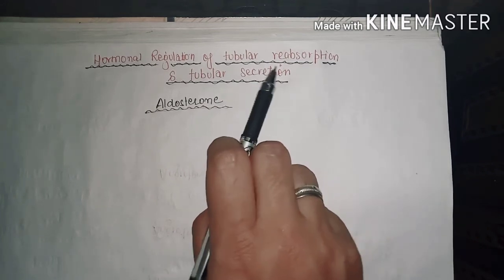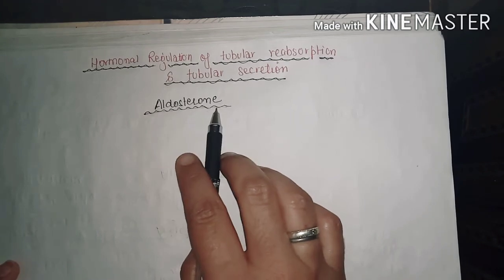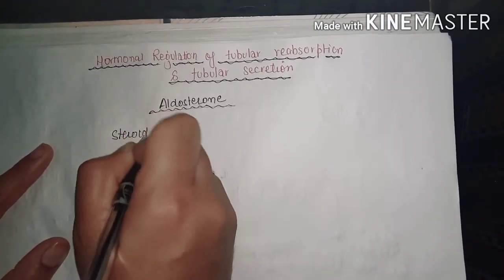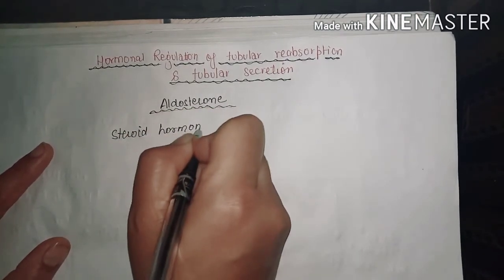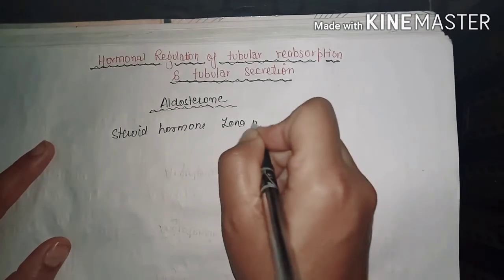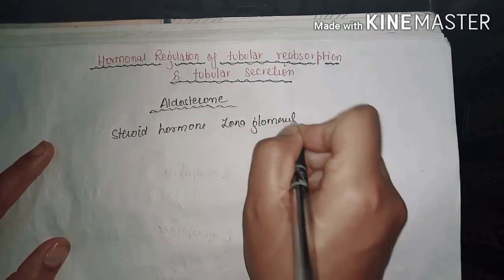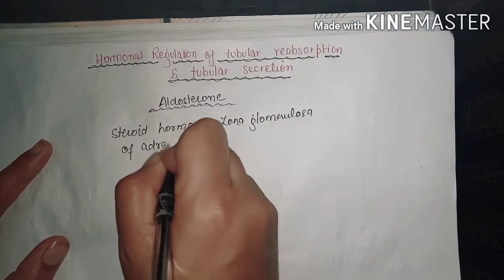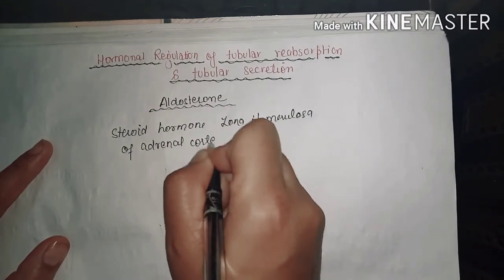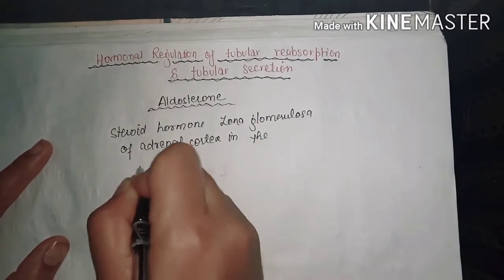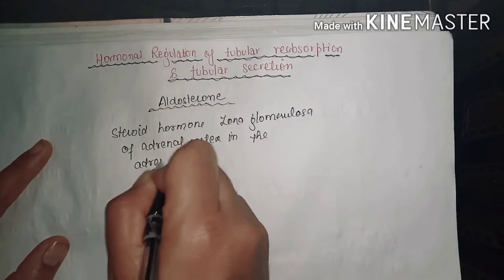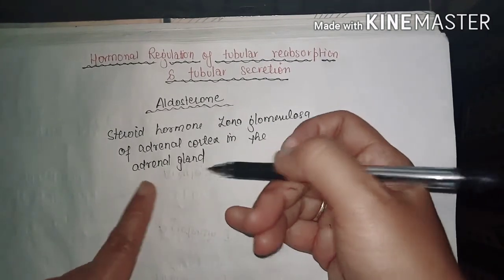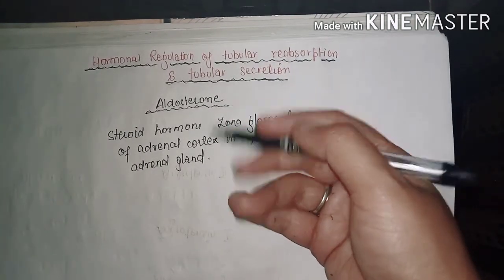The first hormone is aldosterone. Aldosterone is a steroid hormone which is produced by the zona glomerulosa of the adrenal cortex in the adrenal gland.